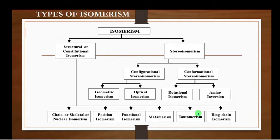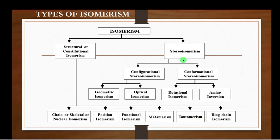In the pictorial aspects, the same point discussed in the last slide is repeated here. Isomerism is classified as structural or constitutional isomerism and stereoisomerism. Structural isomerism is further classified as chain or skeletal or nuclear isomerism, positional isomerism, functional isomerism, metamerism, tautomerism, and ring-chain isomerism. Stereoisomerism is classified as configurational stereoisomerism and conformational stereoisomerism. Configurational stereoisomerism is further classified as geometrical isomers and optical isomers.